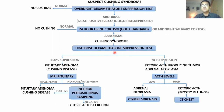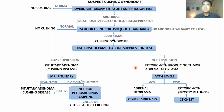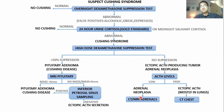In the high-dose dexamethasone suppression test, if there is greater than 50% suppression it means pituitary adenoma suppressed by negative feedback. If not suppressed, it is ectopic ACTH or adrenal neoplasia. To differentiate, check ACTH levels: low ACTH means adrenal neoplasia — confirm with CT/MRI of adrenals. High ACTH means ectopic ACTH production, most often from the lungs — confirm with CT chest.